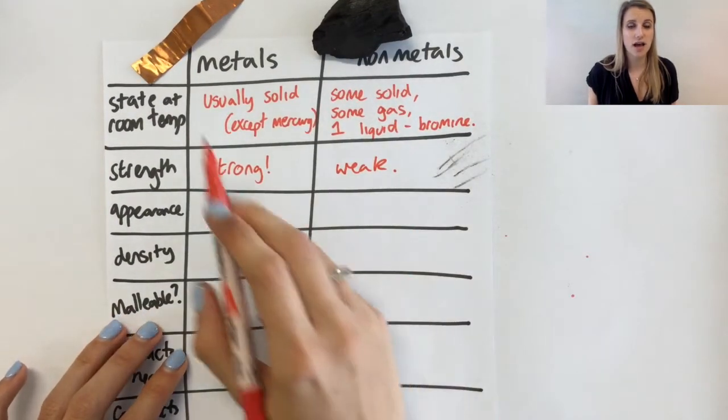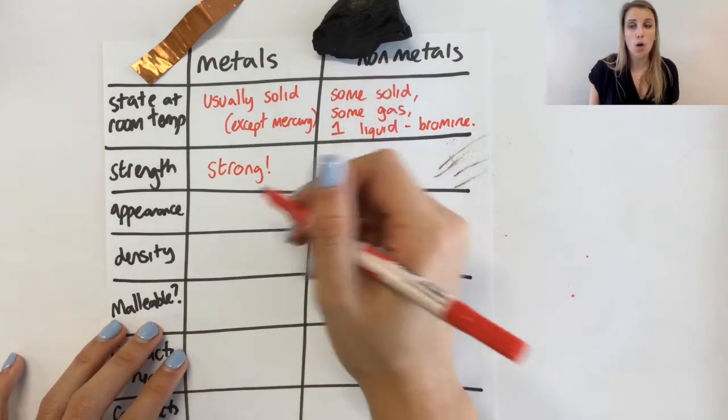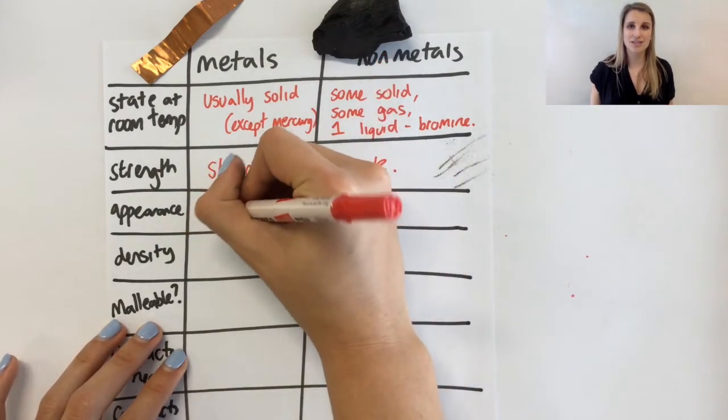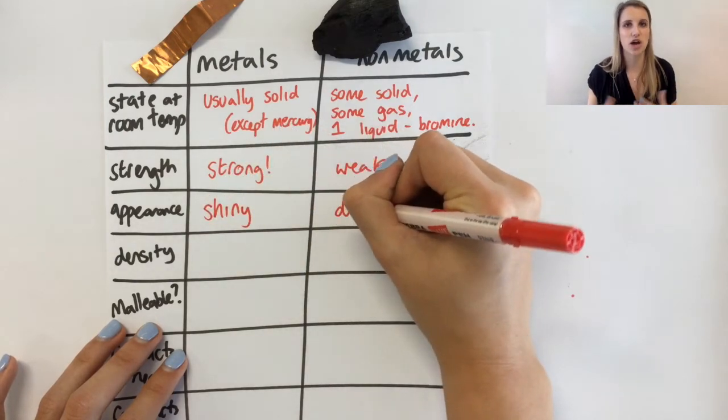Their appearance is very different. My copper, as you can see here, is super shiny. Whereas my carbon is what we call dull, which means it doesn't really have any luster or shine to it.